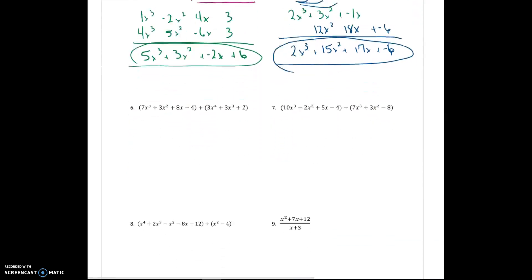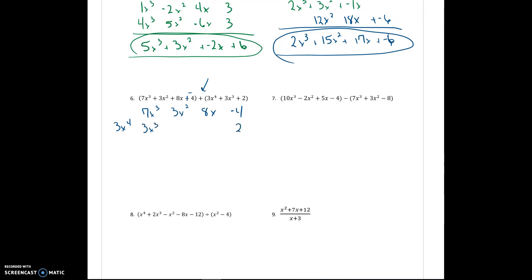Number 6 is not neighbors-meet-neighbors because there's addition here. I'll go through real quick and add the opposite — that only happens with this minus 4. Now I'll rewrite the problem so I can see the stacked like terms. The second set of parentheses has 3x to the 4th, so I put that in front because I want answers in standard form, then 3x cubed and a 2. Some of these don't have anything to add with, so they drop down. When I'm done: 3x to the 4th, 10x cubed, 3x squared, 8x, and negative 2. That's number 6.